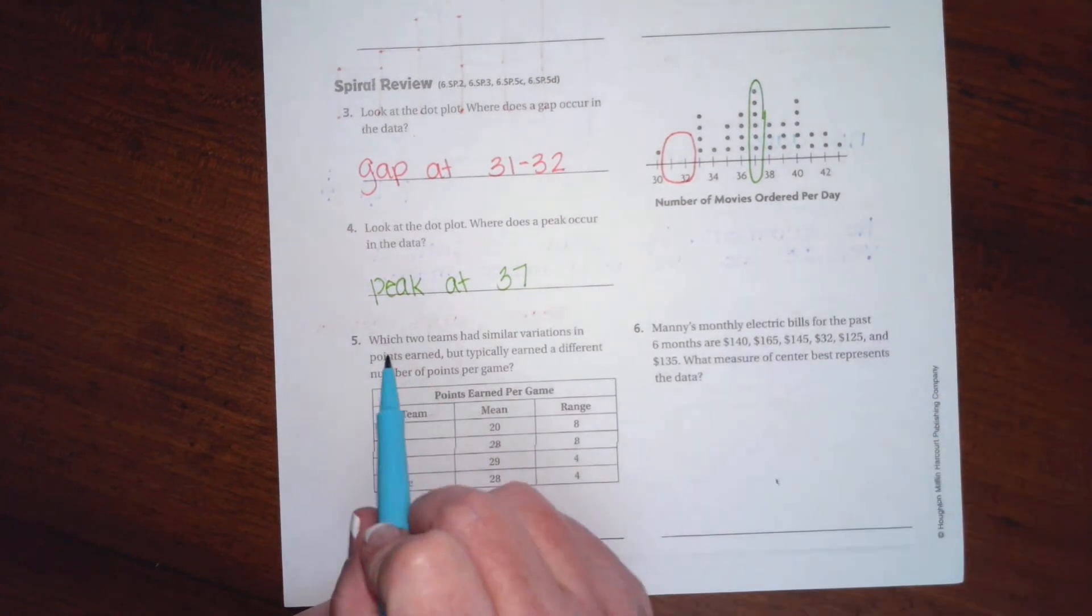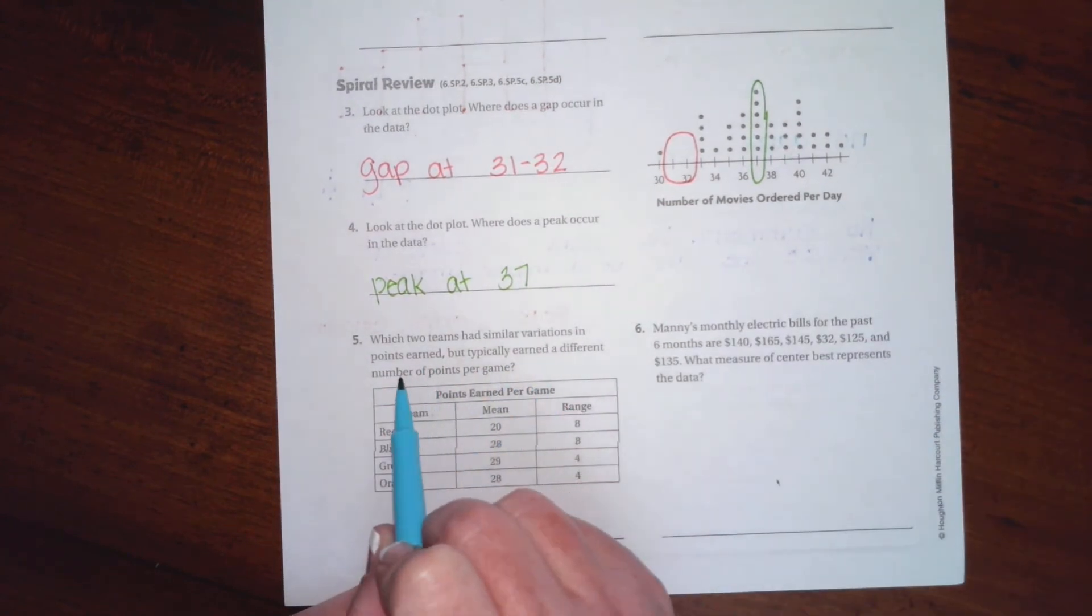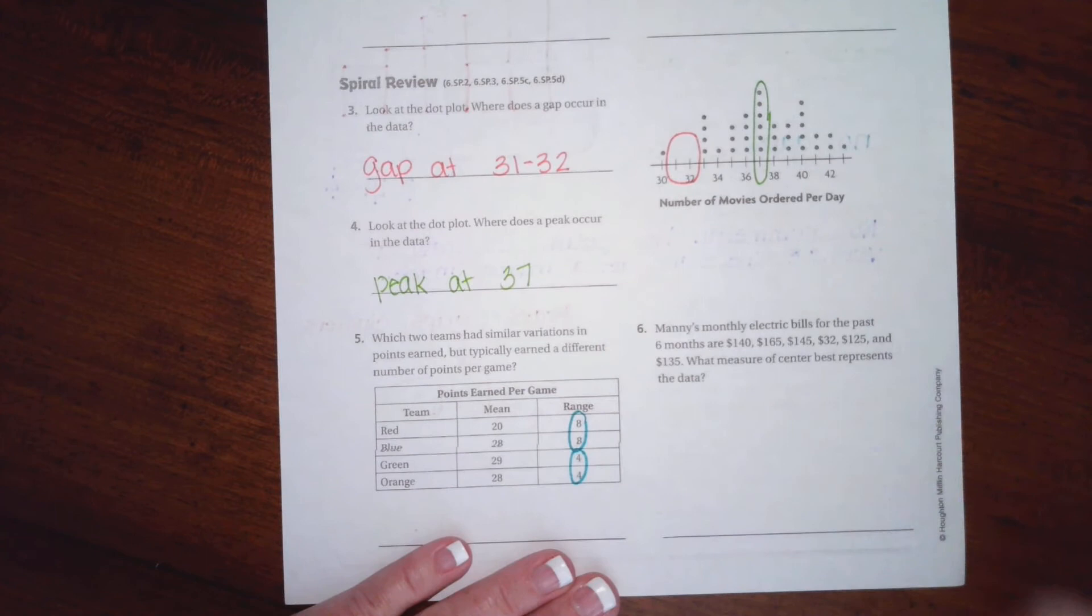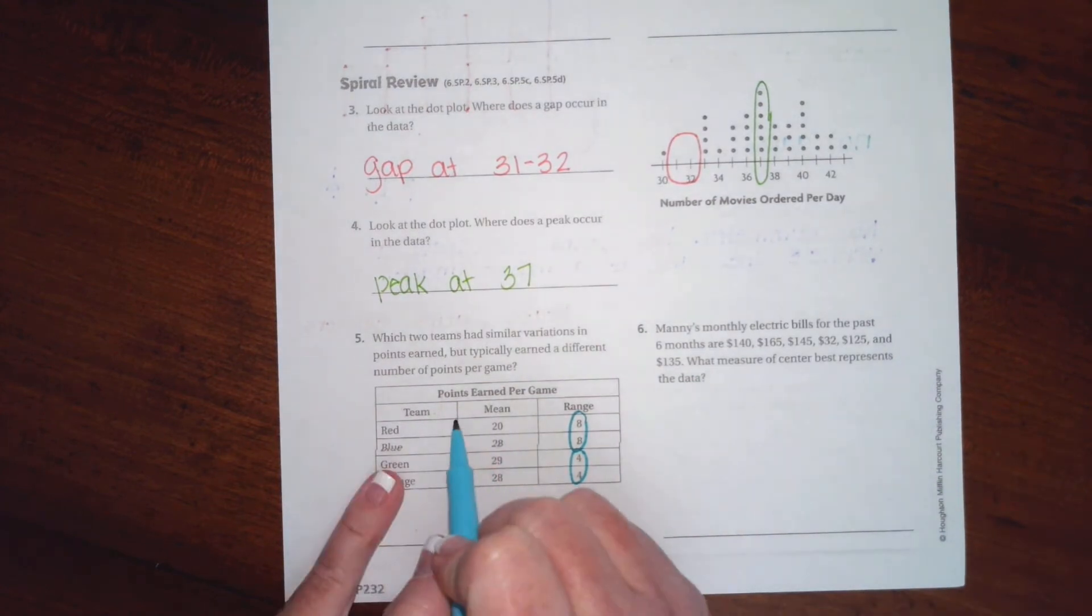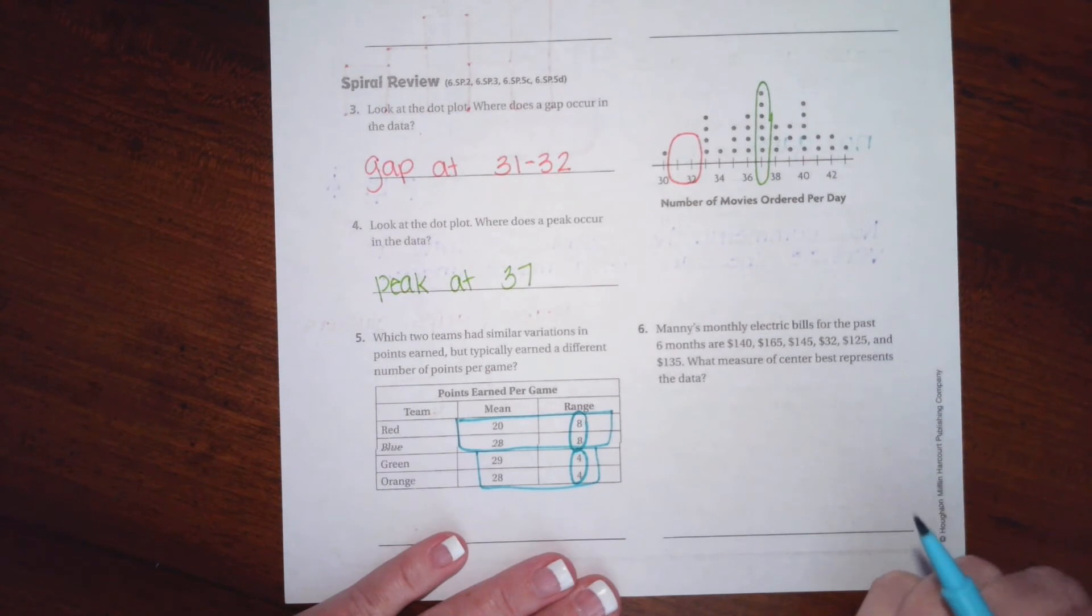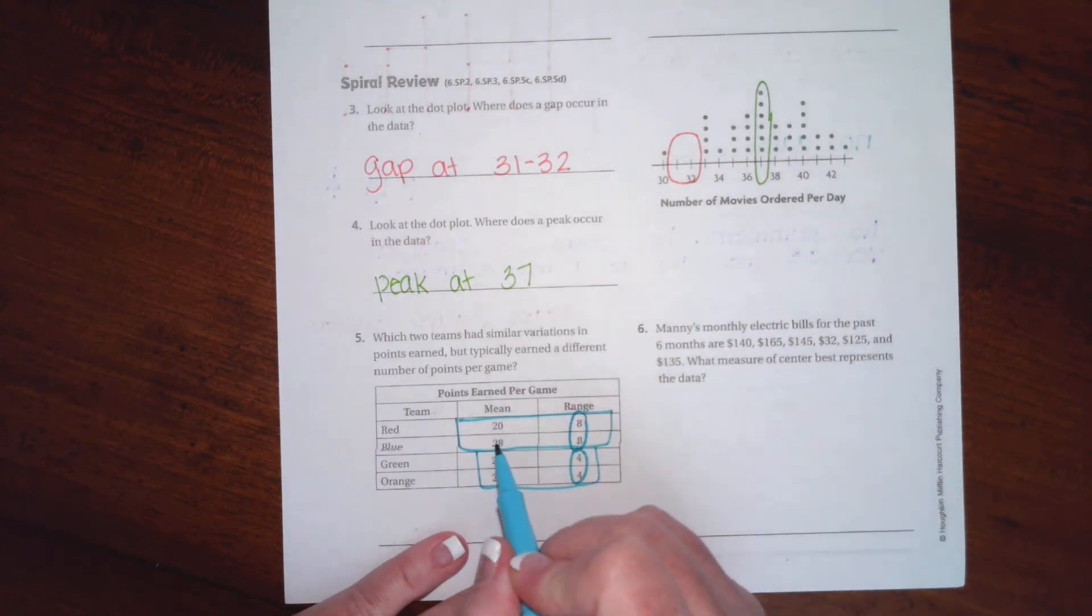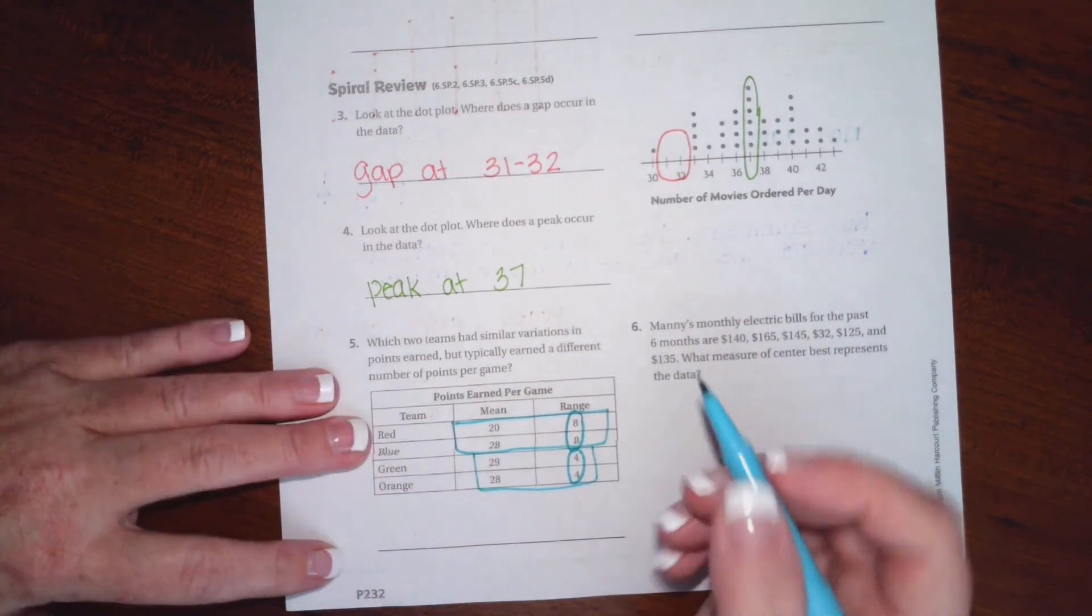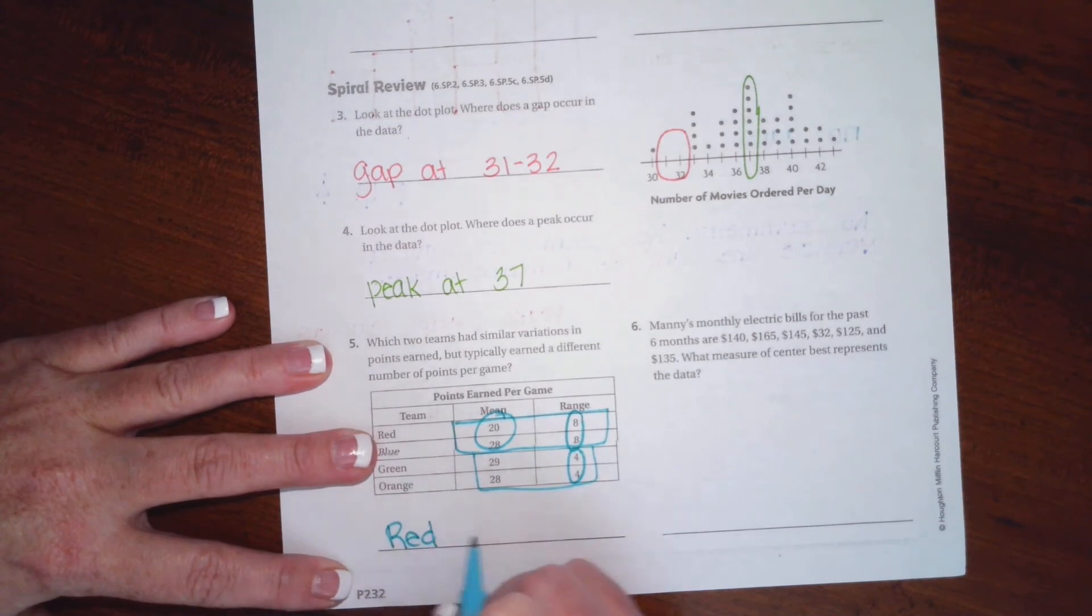Number 5 says which two teams have similar variations in the points earned but typically earned a different number of points per game? So we want the range to be identical, so it's either going to be this or this. So we have this group or we have this group. So the range is the same but the average is very different. The one that's most different is going to be 28 and 20, not 28 and 29. So that would be red and blue.